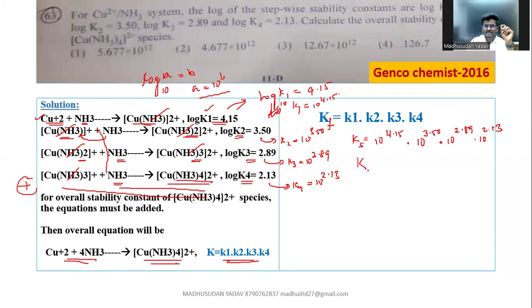So now overall stability constant will be 10 power, when the bases are same, powers must be added. So 4.15 plus 3.50 plus 2.89 plus 2.13. If you sum up all these, you are going to get 12.67 something like this.